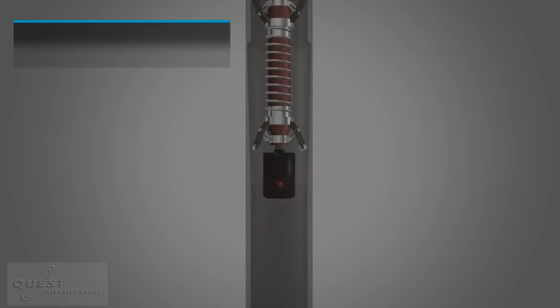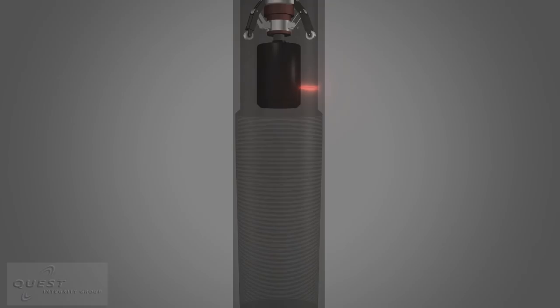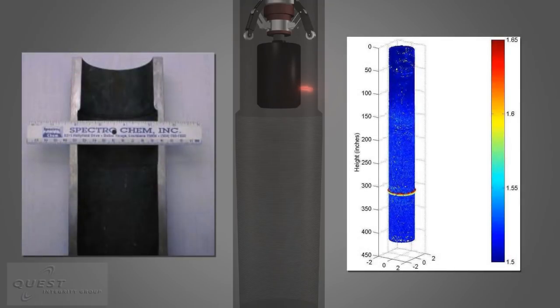LOTUS detects an internal manufacturing gouge inadvertently caused by the manufacturer. Gouges on the tube's internal surface can generate localized stress risers, causing premature cracking.